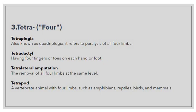Then we have 'tetradactyl' — having four fingers or toes on each hand or foot. When someone has four fingers or four toes on each hand or foot, we use the terminology 'tetradactyl', where 'tetra' denotes four. Then we have 'tetralateral amputation' — the removal of all four limbs at the same level. Again, the sense of four is conveyed, and the prefix 'tetra' is used in 'tetralateral amputation'.